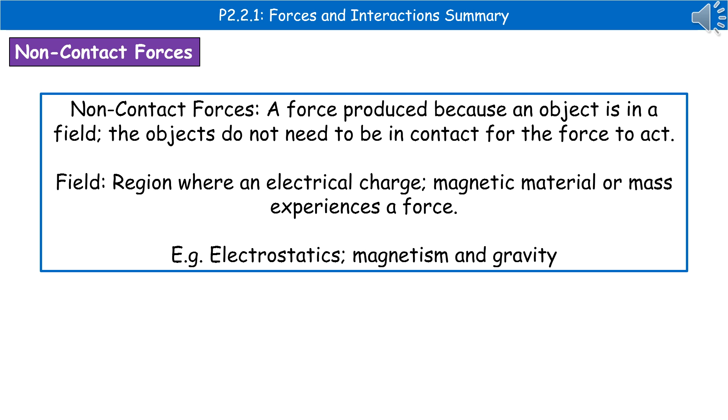Now when we're looking at these, electrostatics will both attract and repel. Magnetism is attract and repel. But gravity is purely an attraction. So gravity only attracts.